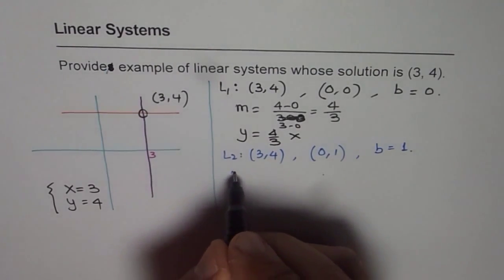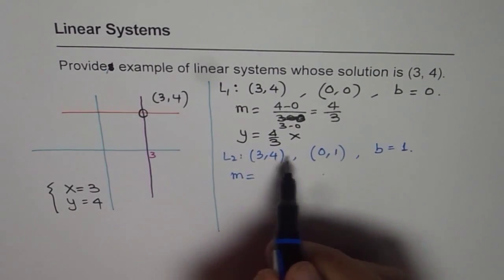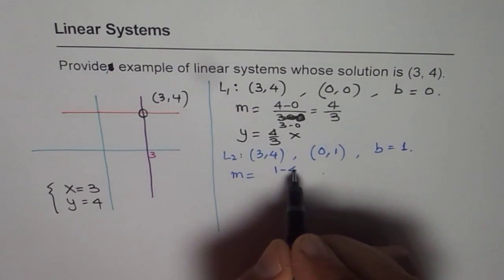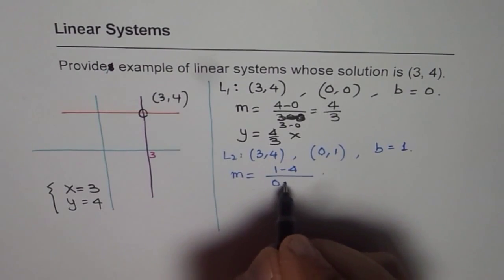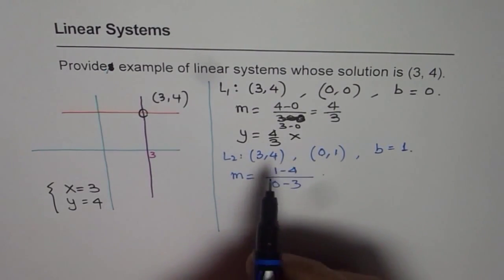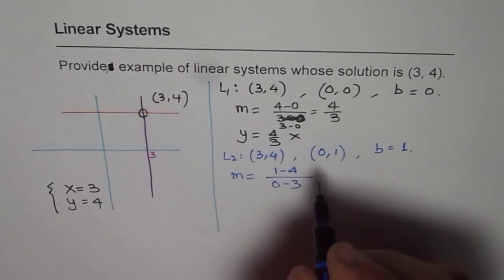Now, in this case, what is the slope? Slope is rise over run. So we can do 1 minus 4, divided by 0 minus 3. The order should be maintained. You could write 4 minus 1, divided by 3 minus 0, as we did in the previous case.